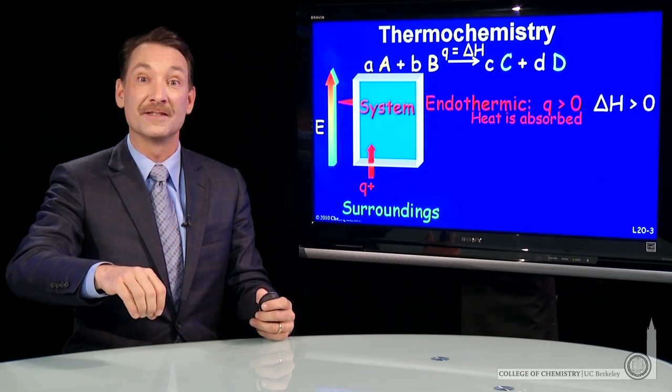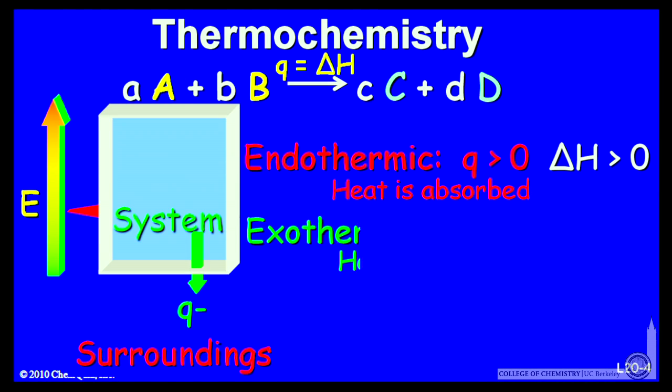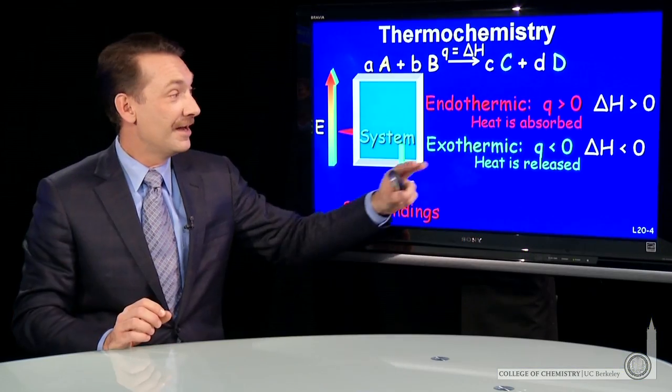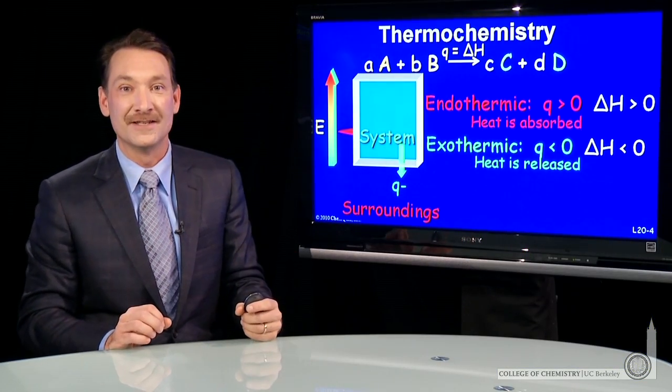A system can also lose heat. In an exothermic process, heat flows out of the system. Heat flowing out of the system gets a negative sign: q < 0 and ΔH < 0.